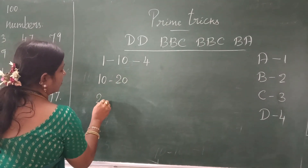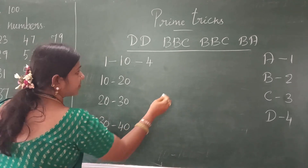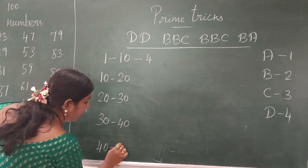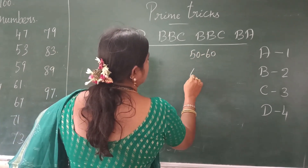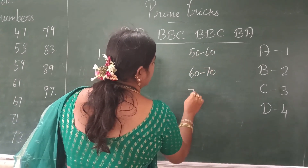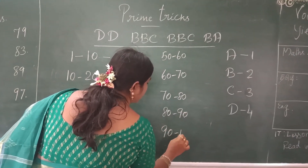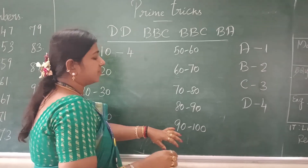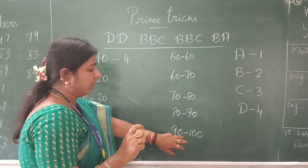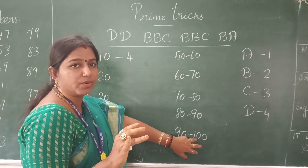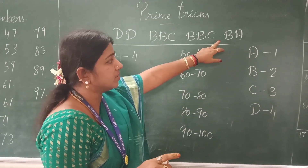For each range of ten: 10 to 20, 20 to 30, 30 to 40, 40 to 50, 50 to 60, 60 to 70, 70 to 80, 80 to 90, and 90 to 100. Suppose someone asks you how many prime numbers are between 90 to 100 — you may not have to calculate. You just use this formula. If you have this formula in your mind, then you will know immediately.